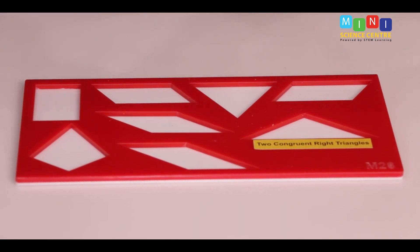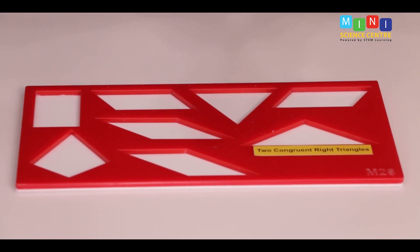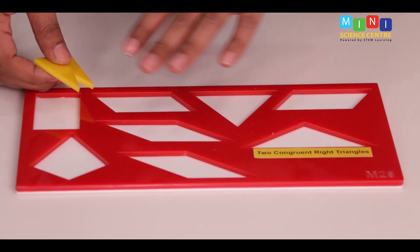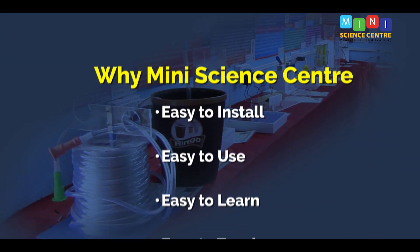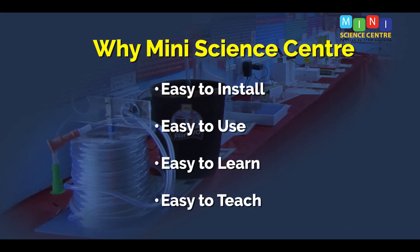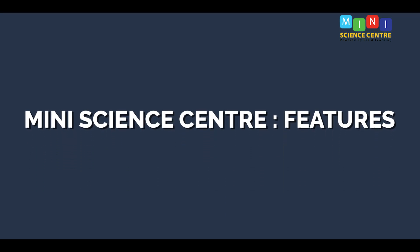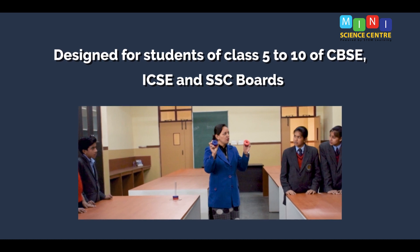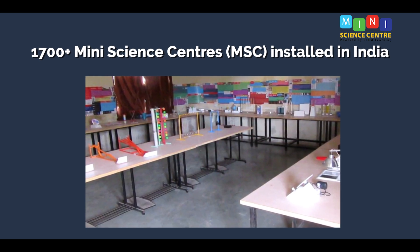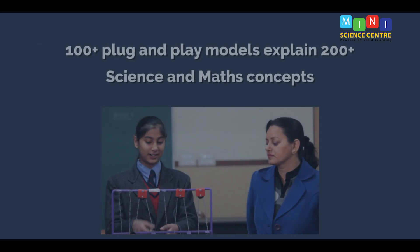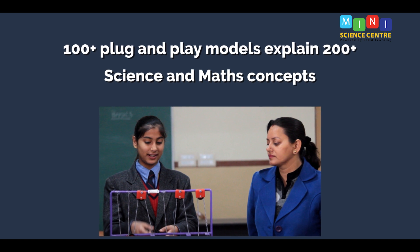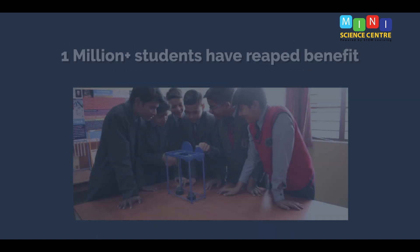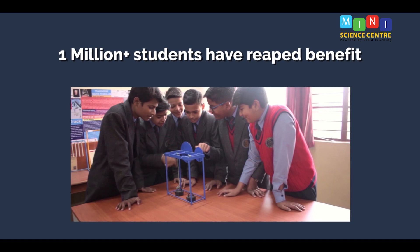So their area will be the same. By using these two congruent right-angle triangles, we can find the area for all of these shapes. And that's one of the key factors.